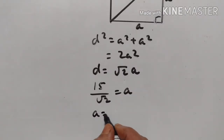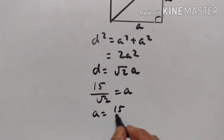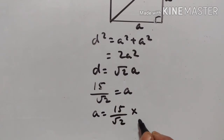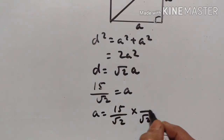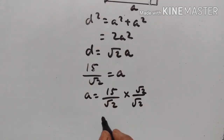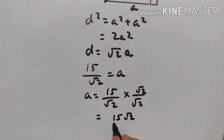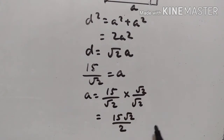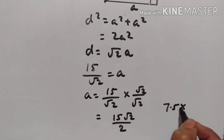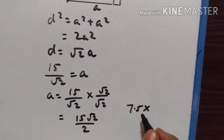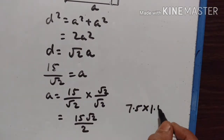So a is equal to 15 upon square root of 2. We rationalize the denominator, and we get 15 square root of 2 upon 2. 15 upon 2 is equal to 7.5, and 7.5 into square root of 2, where square root of 2 is equal to 1.414.